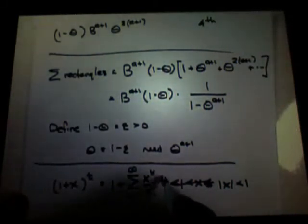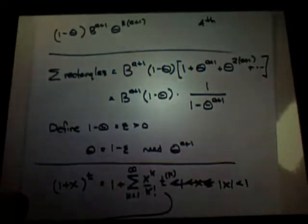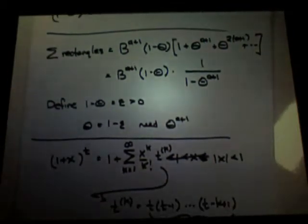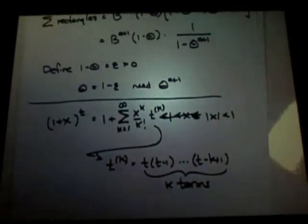x to the k over k factorial times t to the factorial exponent of k, where t to the factorial exponent of k is t, t minus one, down to t minus k plus one, so that there are k terms in the product. So t to the factorial power, rather.